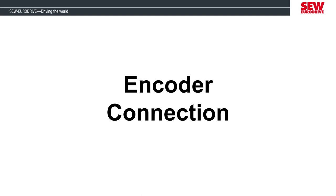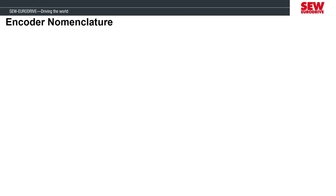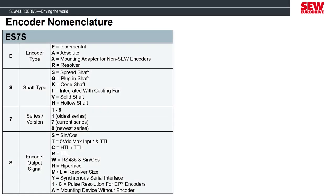Let's start by talking about our encoder nomenclature and how it's connected. We have a wide selection of encoders to choose from, and our encoders follow a four-character naming style. The first letter tells what type of encoder it is, such as incremental, absolute, or resolver. The next letter is the type of output shaft the encoder uses, which varies based on how the encoder connects to the rotor. The number represents the series: the one series was used on older DT and DV motors, the seven series on DR motors, and this year we are releasing the eight series encoders for DR motors.